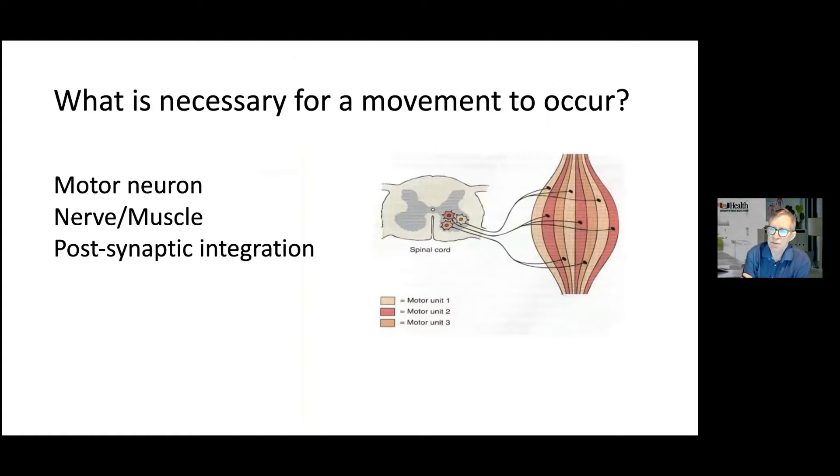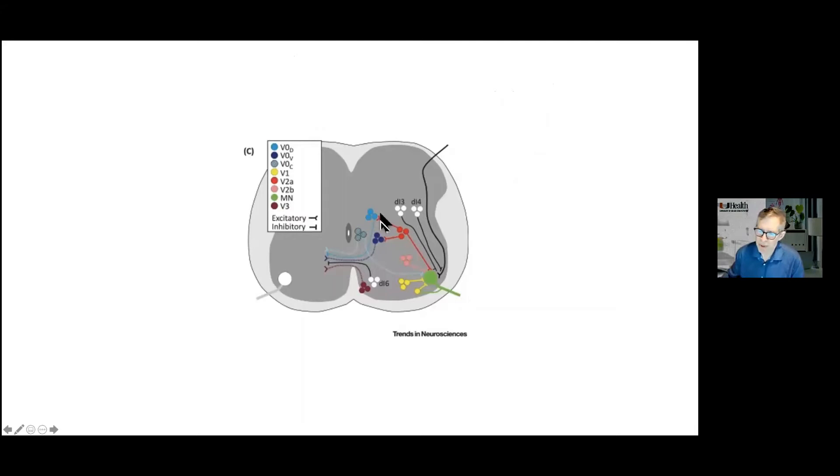So what is necessary for a movement to occur? Well, we need the motor neurons, we need the muscle, and then we have a lot of integration that occurs. So what I'm showing here is just some of the inputs to a motor neuron, which are inhibitory or excitatory. So what's happening here is all these inputs influence the post-synaptic potential as to whether this motor neuron will fire or not. So it's a very complex and integrated system.